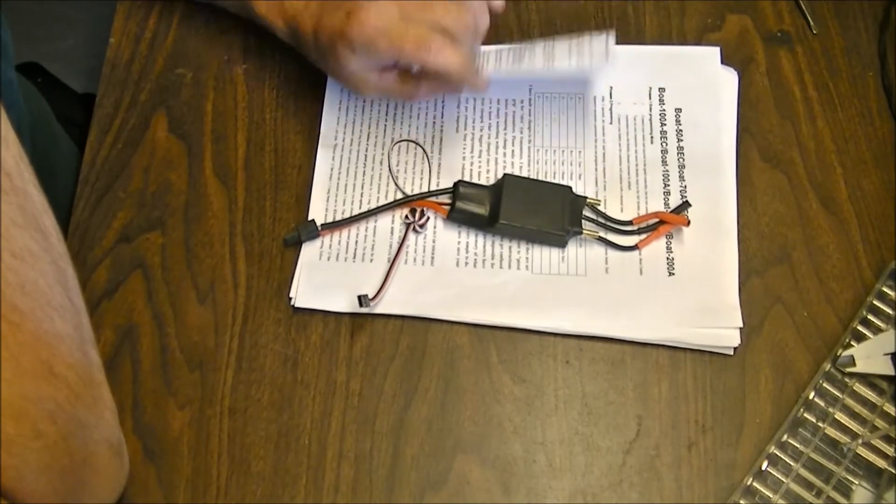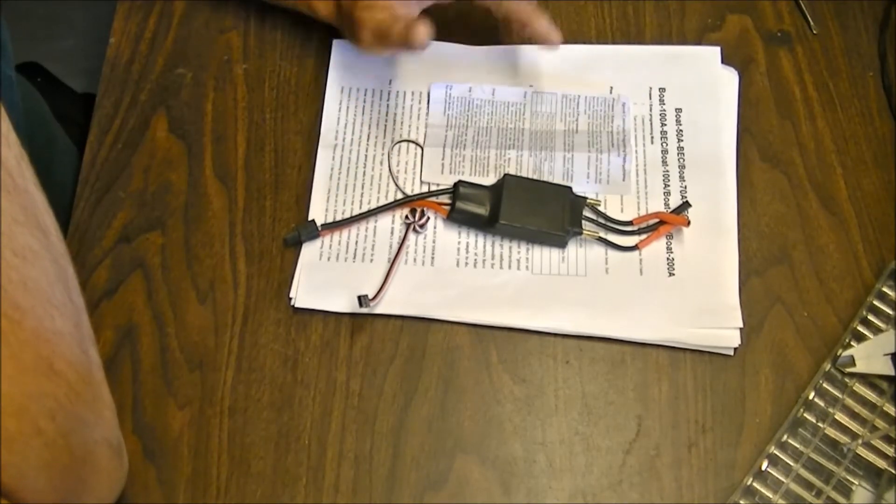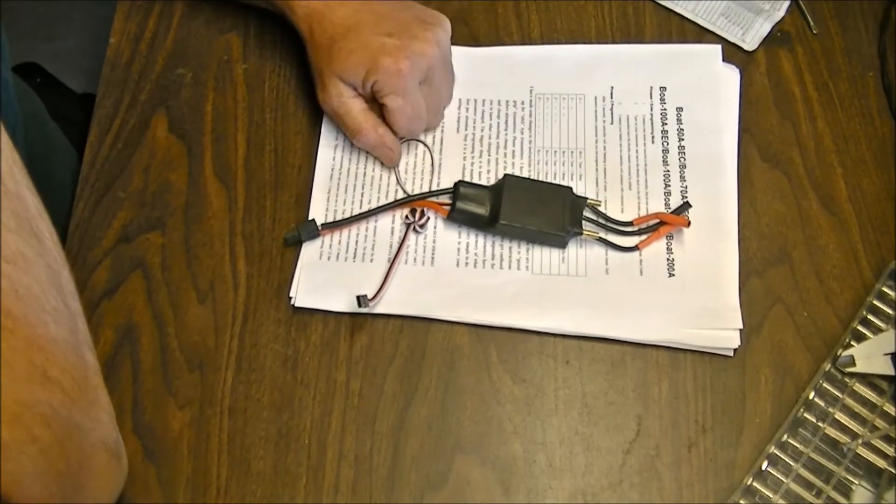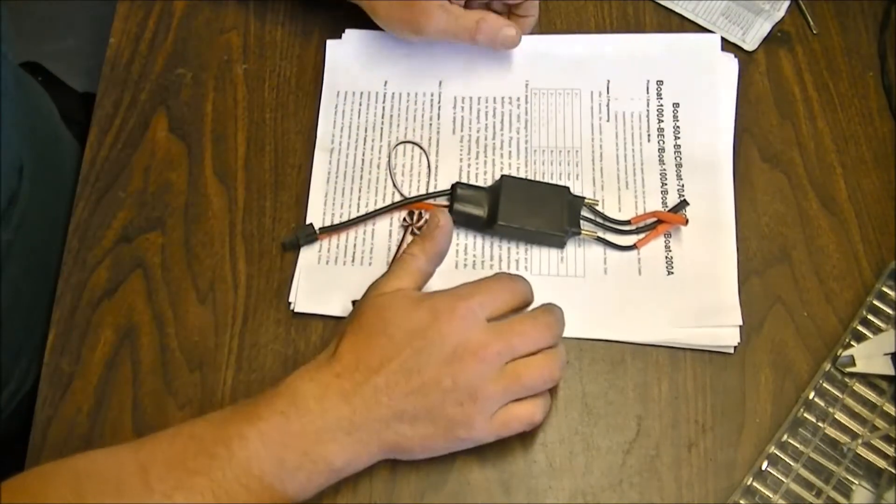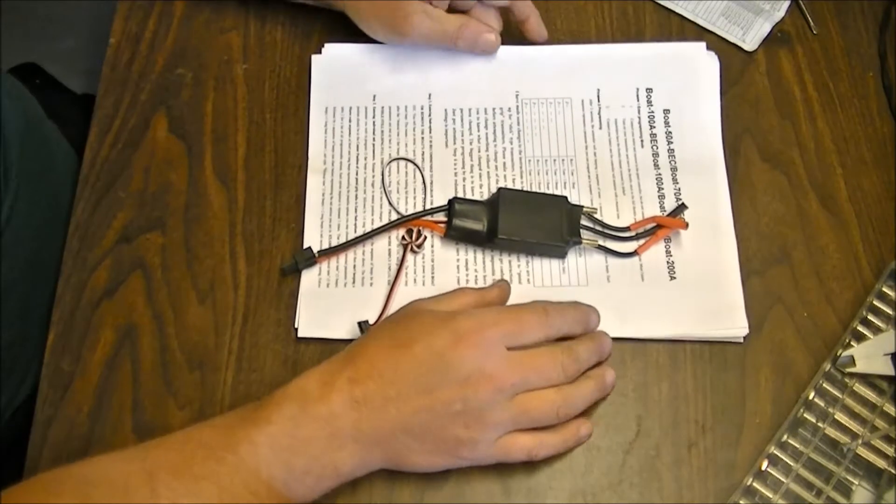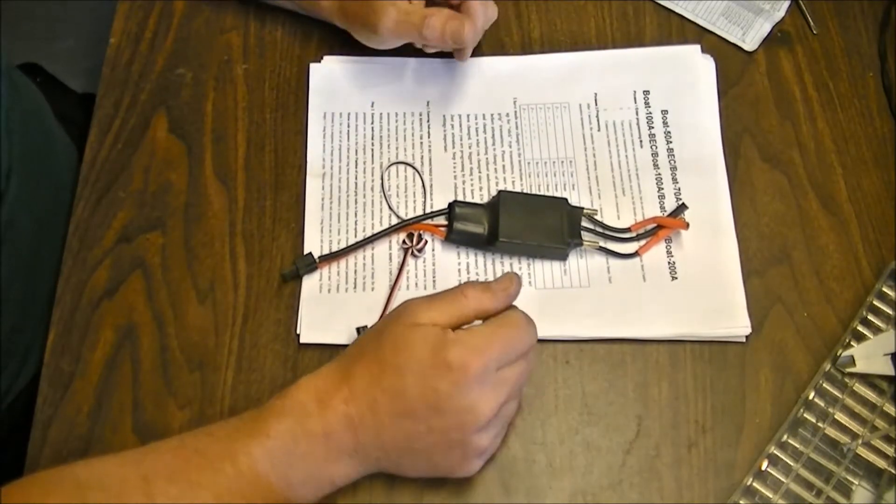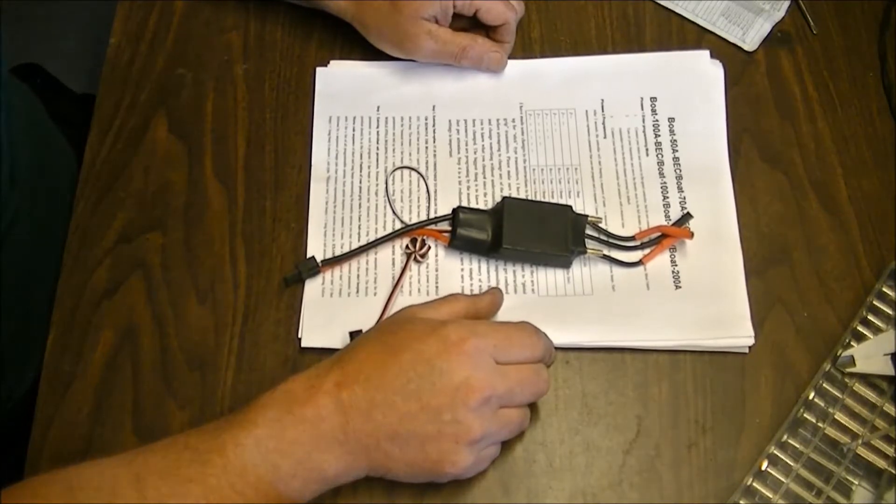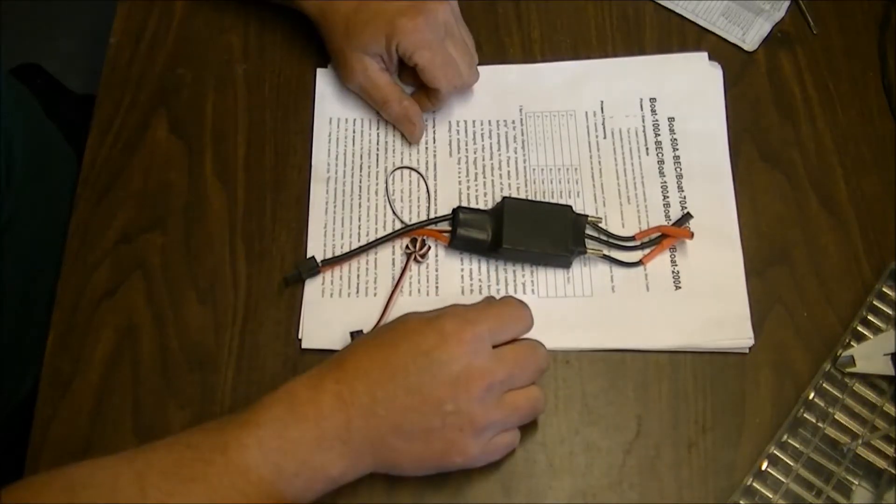The instructions that come with this thing are actually for toggle radio users. That did me a lot of good, not. I use a pistol grip for my boats and land vehicles. I only use toggles for airplanes, quads, and helicopters because that's where those radios in my opinion belong.